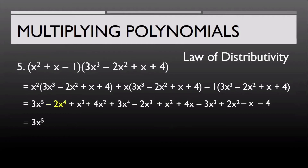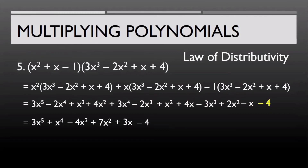Now combining like terms: copy 3x⁵. Then −2x⁴ + 3x⁴ = x⁴. For the third degree: x³ − 2x³ − 3x³ = −4x³. For the second degree: 4x² + x² + 2x² = 7x². For the first degree: 4x − x = 3x. And just copy the constant, minus 4. So the final answer is 3x⁵ + x⁴ − 4x³ + 7x² + 3x − 4.